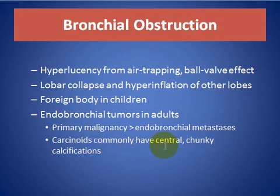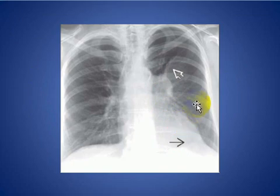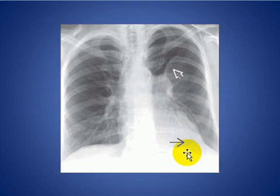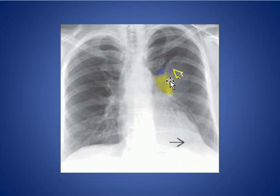Carcinoid is the most common endobronchial tumor and has central chunky calcification. Here we see a chest X-ray in a patient with left upper lobe collapse from a carcinoid tumor, with elevation of the left hemidiaphragm, juxtaphrenic peak, left shift sign, and air crescent sign in that area — consistent with left upper lobe collapse.